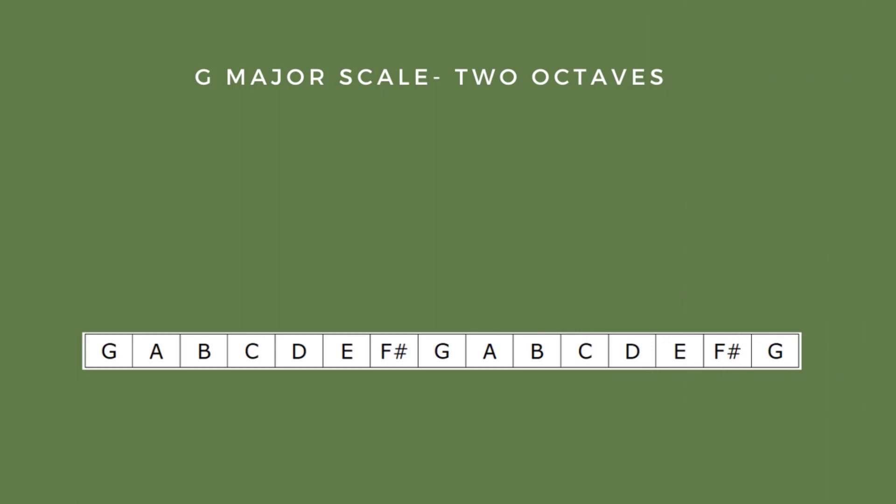The next interval we're going to practice and add to our ever-growing sonic resources is the interval of a sixth. It's the same process that we just went through for the thirds. We start with the G major scale and then layer the scale over itself, this time at an interval of a sixth. Here's how that looks.